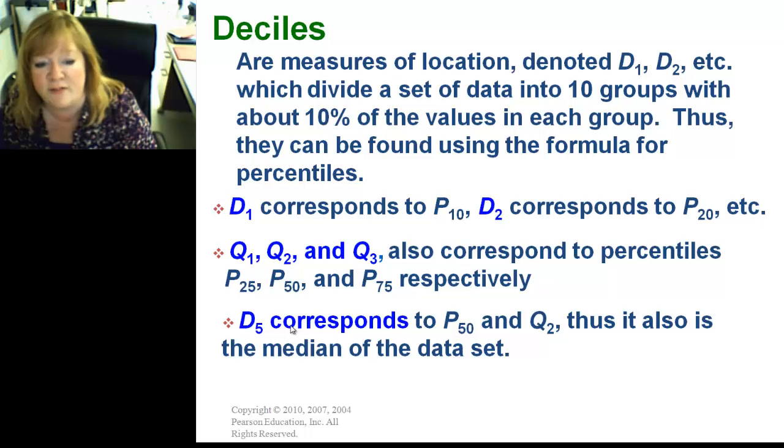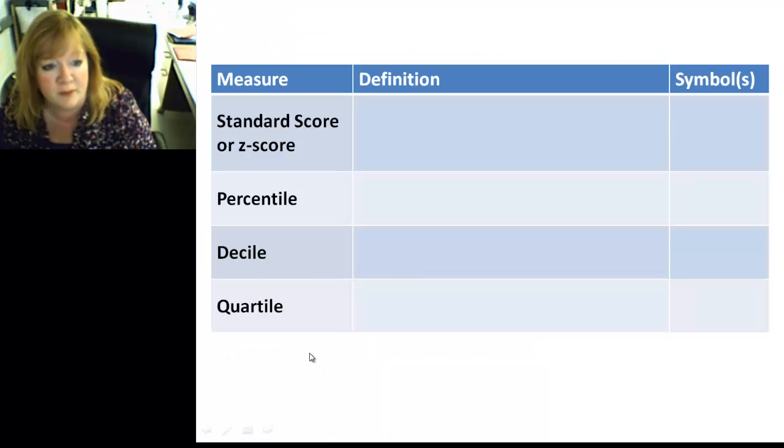And, D5 is the halfway point. Because, it's 5 out of 10. So, it would correspond to P50, and Q2. Thus, it is also the median. Bingo. That goes on your sheet.